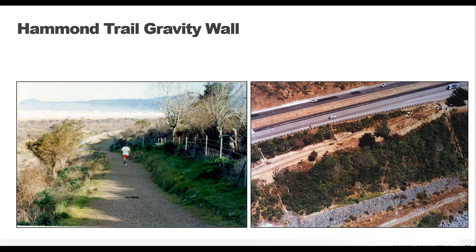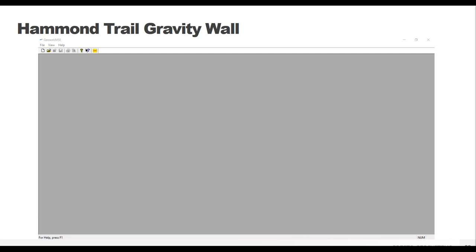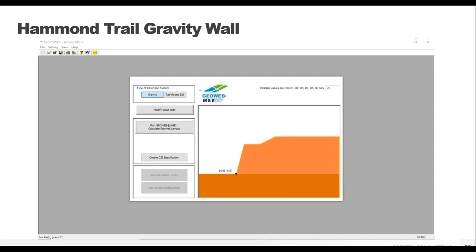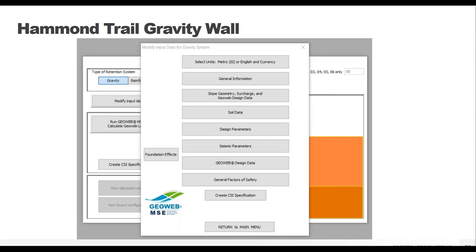Once you've opened the program, this is your basic starting screen with standard icons for open, save, and print. To get started, pick the far-left icon for a blank new page. Our first question is whether we're designing a gravity or reinforced wall - in our case a gravity wall. You click that and move on to input the data for our model. Once you click to input your data, a list appears showing all the data the program needs in order to give results. You need to fill out all of these tabs, and it's usually easiest to start at the top.